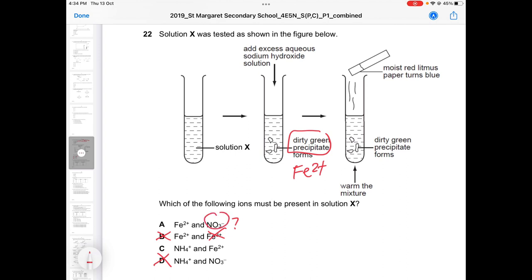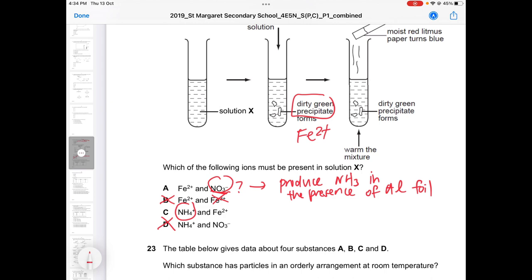Now we are comparing nitrate versus ammonium anion. Nitrate will only produce NH3 in the presence of aluminium foil. You must have aluminium foil with sodium hydroxide and warm, then you can have your ammonia gas for nitrate. That's why those of you who chose A, take note. Nitrate will only produce ammonia gas in the presence of aluminium foil.